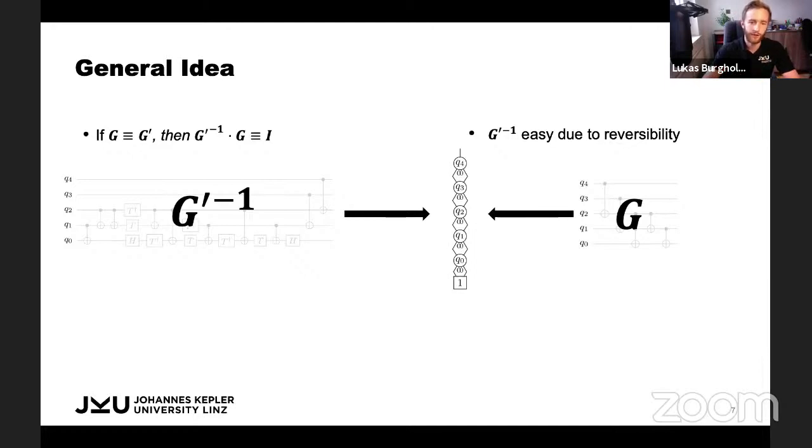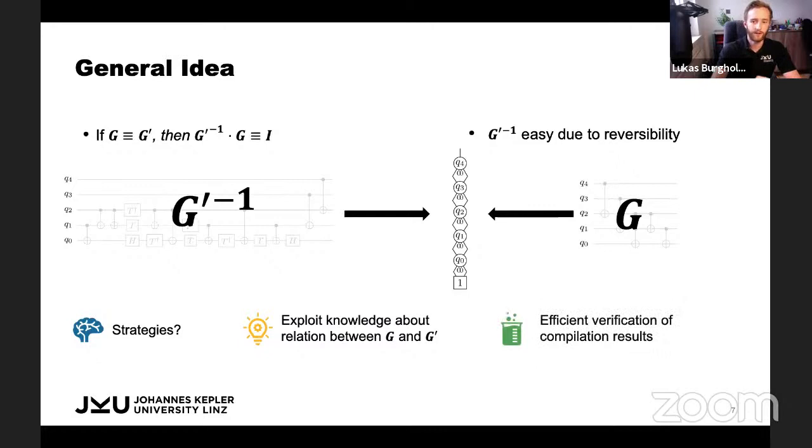So what we conceptually did is we started with the identity, successively applied gates from either side with the goal of staying as close as possible to the identity because it is the most compact decision diagram. The question that now naturally arises is how to choose when to apply gates from either circuit. The idea is that the circuits G and G prime in our case, when verifying the results of compilation flows, are no generic circuits. We can exploit the relation between the two because we know that G prime is the compiled version of G.